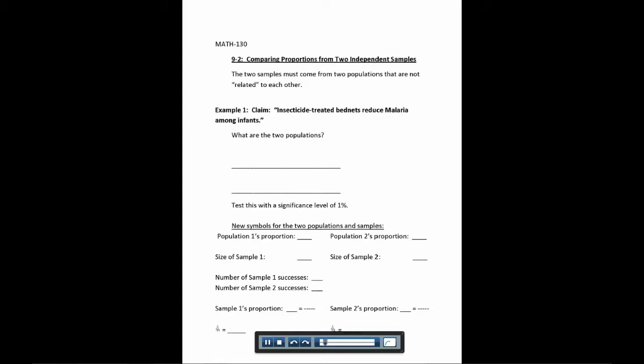For example, let's say we were talking about men versus women's pulse rates. We wouldn't want pairs of husbands and wives. We wouldn't want pairs that somehow were connected to each other. So we want independent samples.